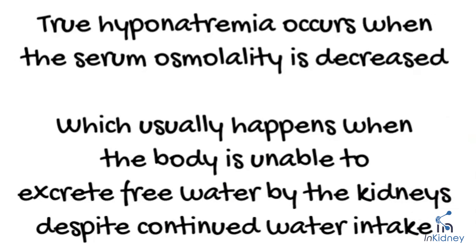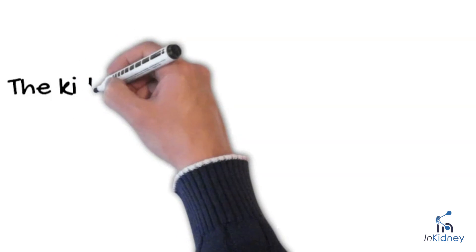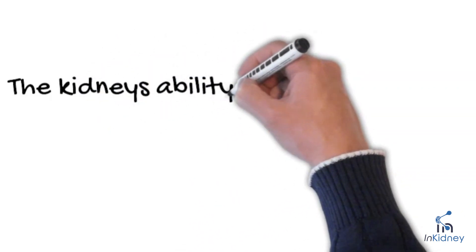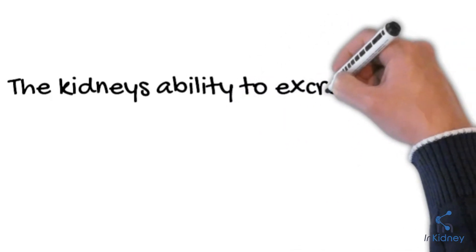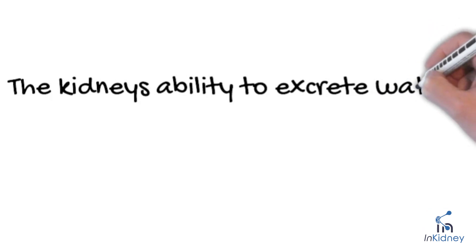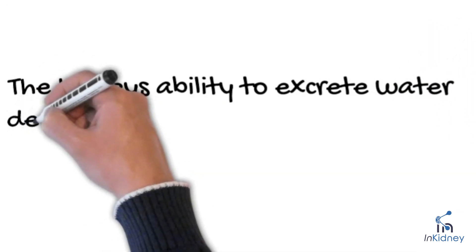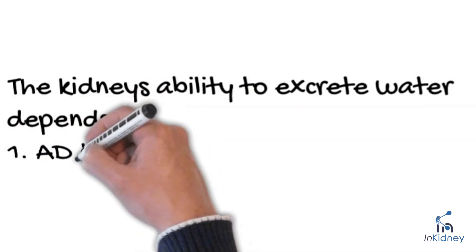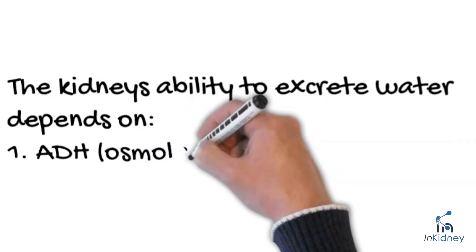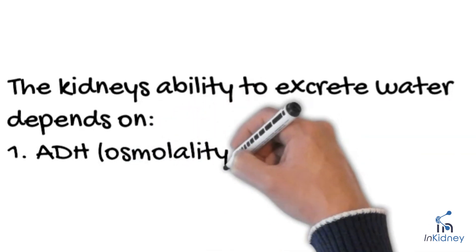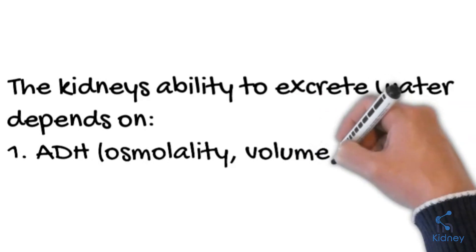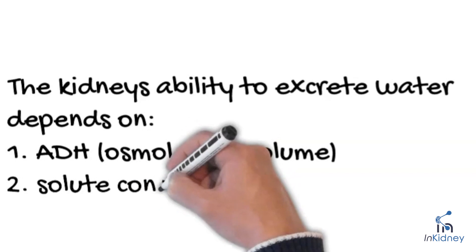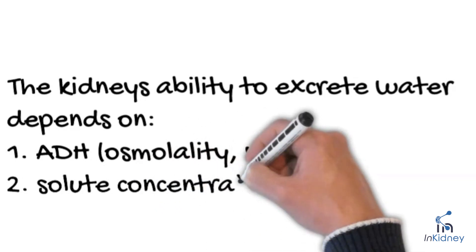The kidneys' ability to excrete water is dependent on two major things. One of them is the antidiuretic hormone or vasopressin, which is excreted by the pituitary gland based on osmolality and volume status of the body. The other thing is the concentration of solute in the medulla.